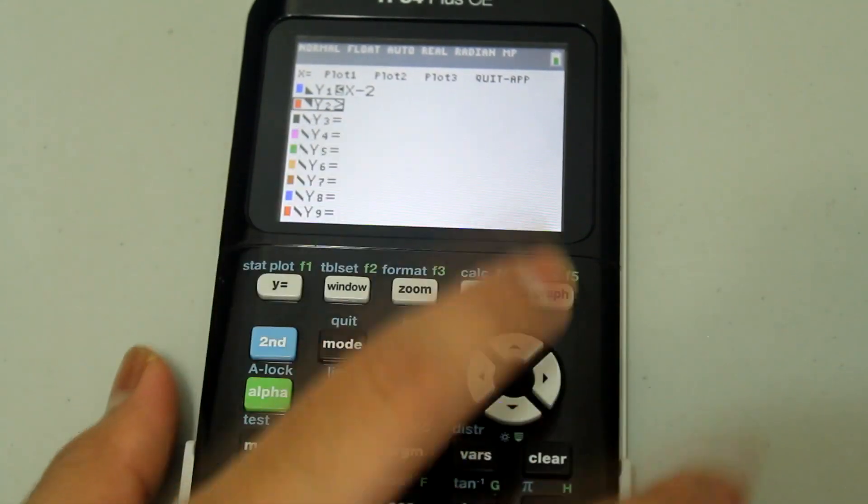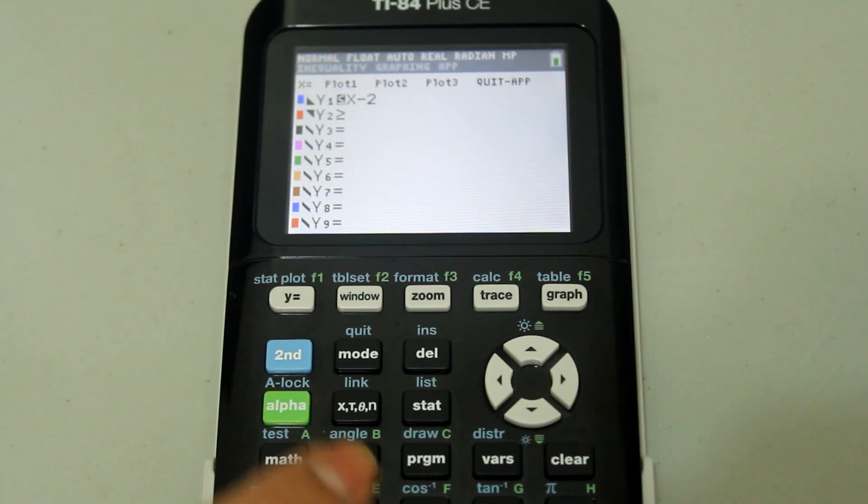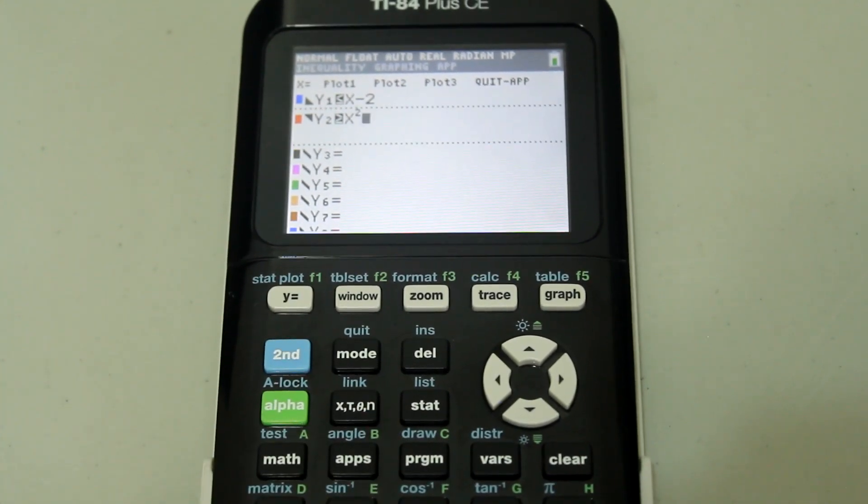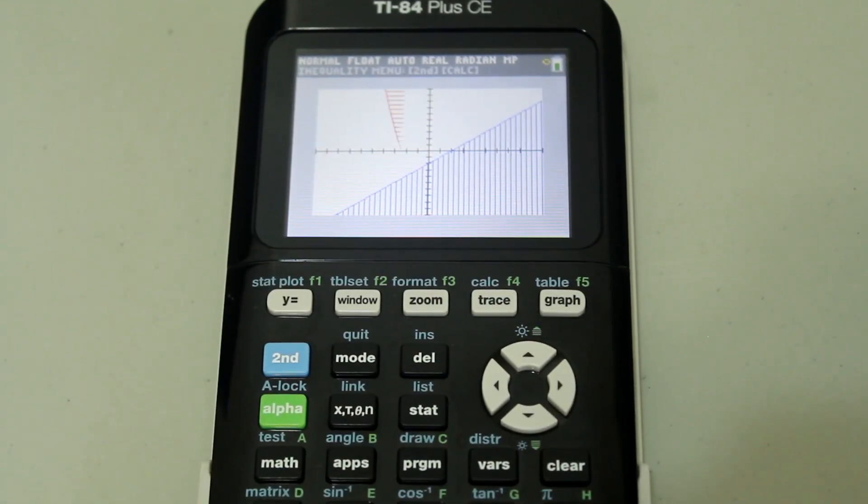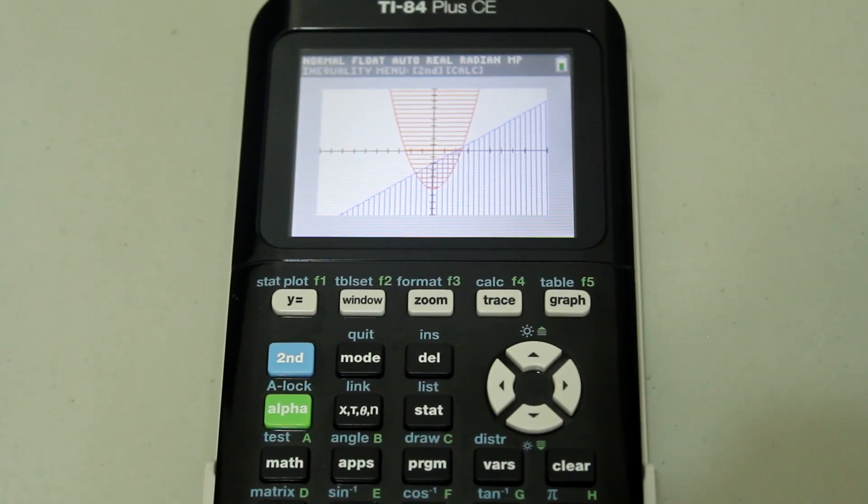And you see that the sign changed. Let's do x squared minus 6 and go back to graph. And both inequalities are graphed.